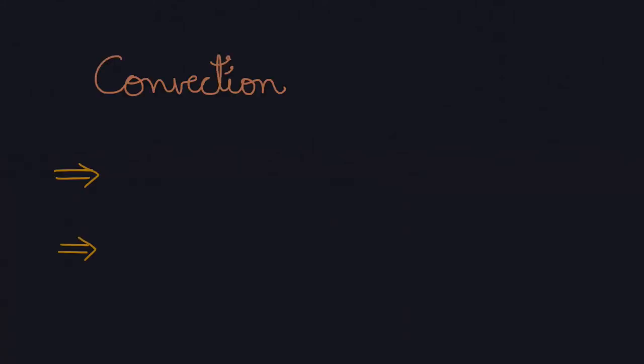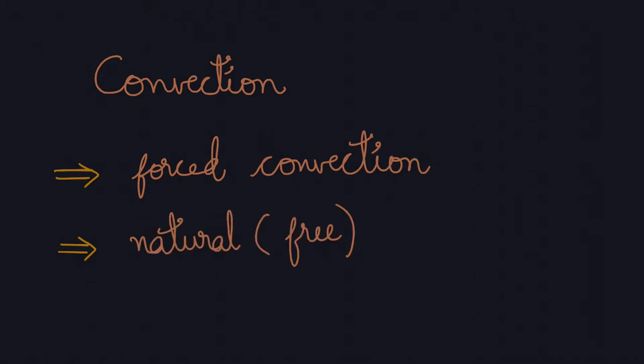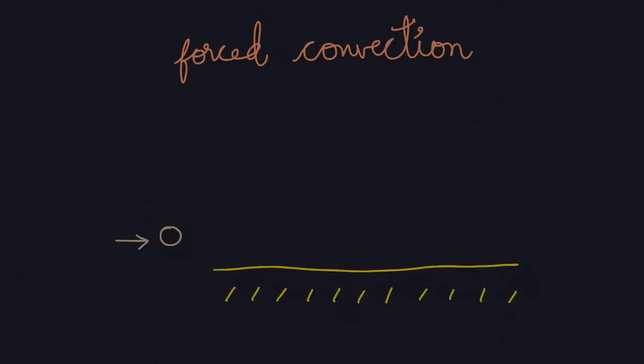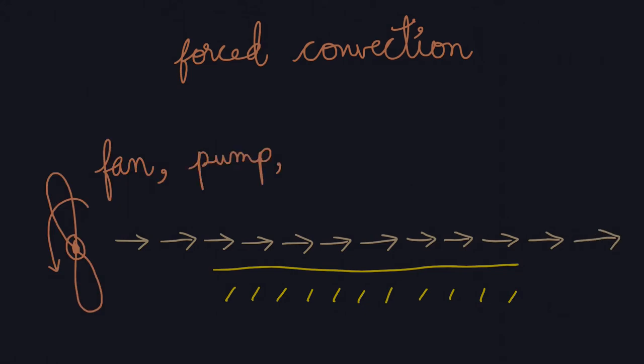Convection can be of two types: forced convection and natural or free convection. In forced convection, the flow of molecules is mainly because of an external source such as a fan, pump, or wind.